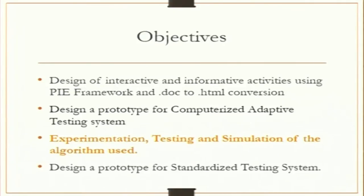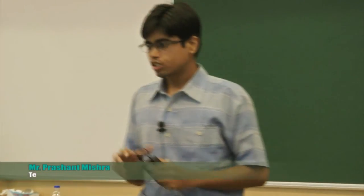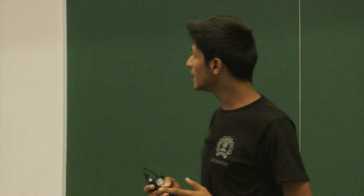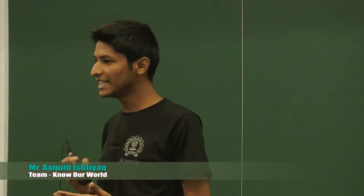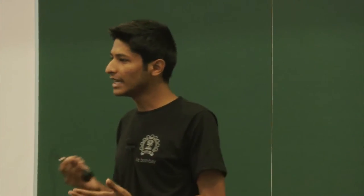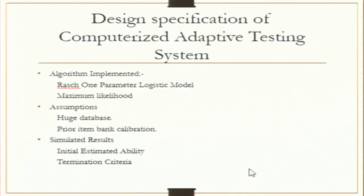The third basic objective was to develop experimentation, testing, and simulation of the computerized adaptive testing model. For the CAT, we have opted to implement the Rasch 1-parameter logistic model, which assumes that the difficulty and ability of the user are on the same scale. It also assumes that the answer to a question will either be correct or incorrect, giving no weightage to individual options. To calculate the next ability, we used an interpolation formula to give the best fit from the database. The algorithm assumes a very large backend database that never falls short of questions, and that the database is properly calibrated with no error in item calibration.